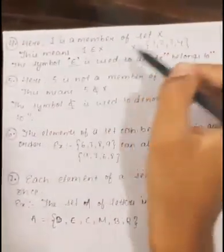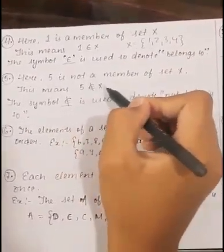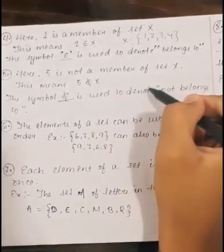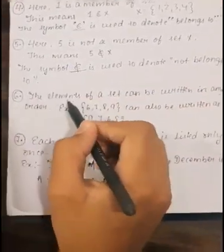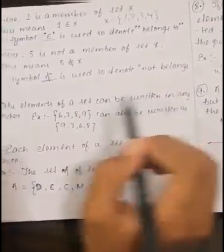Here in the set, 5 is not a member of set X. This means 5 not belongs to X. The symbol is used to denote not belongs to.